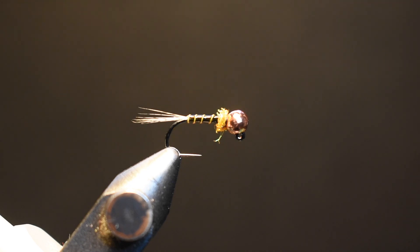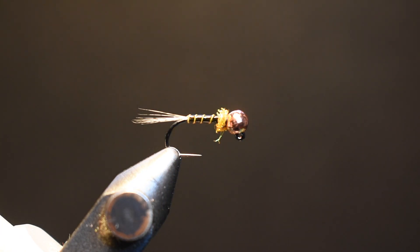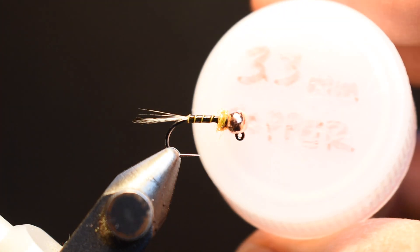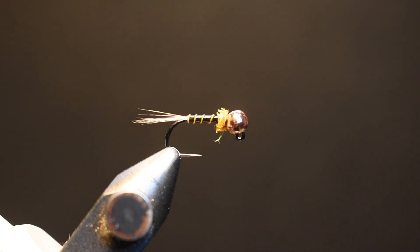And that is your thread Frenchie. One thing I forgot to mention: this is a size 14 hook with a 3.3 millimeter slotted copper bead. Sorry, I totally forgot to add that earlier. As far as fishing this pattern...